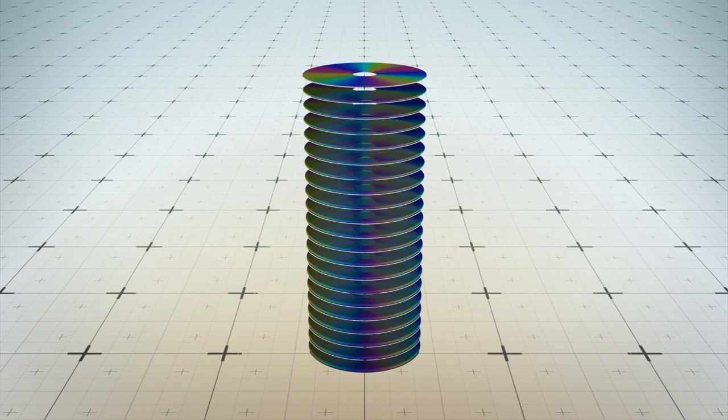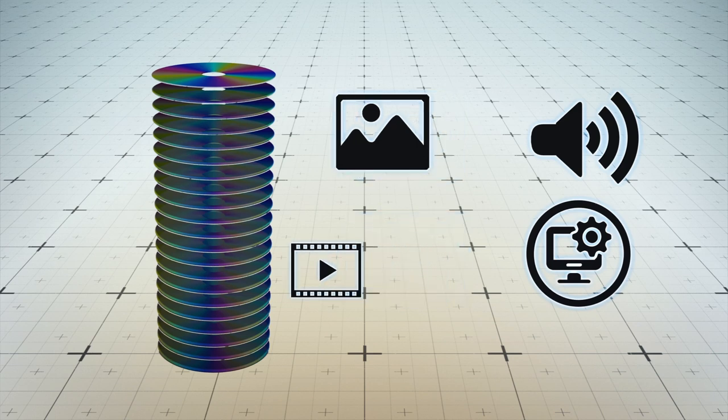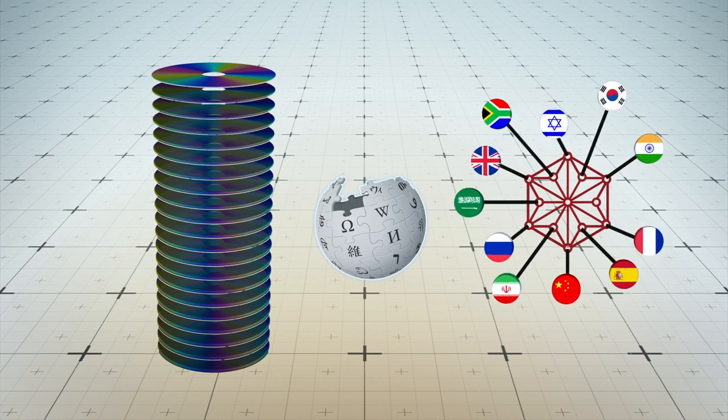The 21 layers beneath are encoded with 200 gigabytes of information: images, audio, video, and software. This includes a complete copy of the English-language Wikipedia and the Panlex datasets, which is a linguistic key to 5,000 languages.